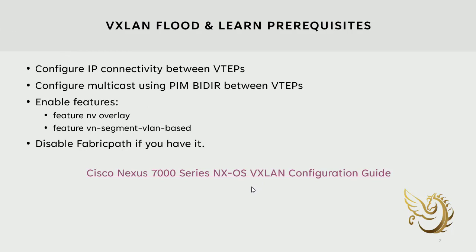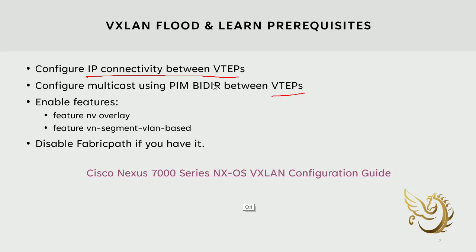Going back to the slides, let's look at what features we need to enable VXLAN. First, you need full IP connectivity between your VTEPs. VTEPs are going to be my leaves — the leaves create tunnels between them. VTEPs here refer to all my Nexus switches. IP connectivity is important because they need to be able to route to each other.